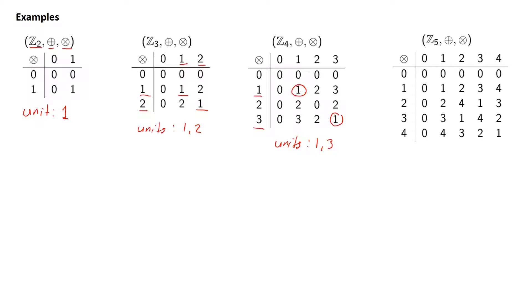Adding one more element, we have the ring Z5 with operations addition modulo 5 and multiplication modulo 5. Looking at the table, the units are the elements 1, 2, 3, and 4, because all of these have a multiplicative inverse. So the units here are 1, 2, 3, and 4.